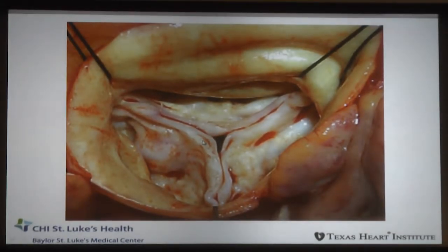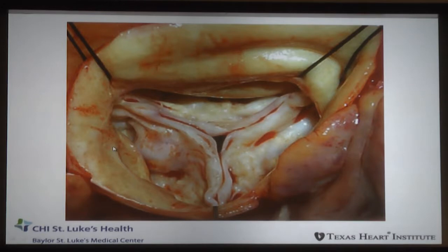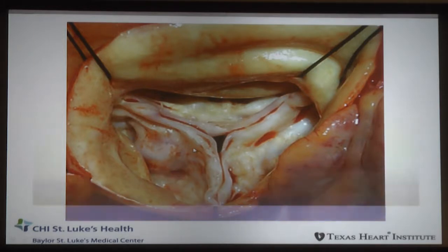Just honing in here — this is the aortic valve, this is a stenotic aortic valve. Many of you have seen these in the OR or pathology slides. This is essentially a transected root, and you can see the three commissures, highly calcified valves. Typically when we're talking about replacement of a valve like this, we have to essentially cut this out along the annulus, remove it, and then sew in a brand new valve when we're looking at doing an aortic valve replacement.